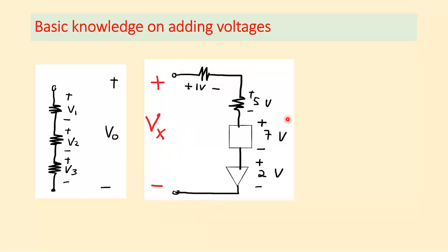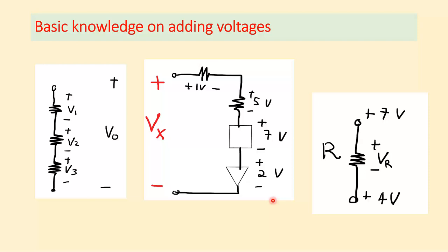There is also an important distinction between voltage at a point and voltage across a device. The voltage at a node is always measured with respect to ground. So if one node is at 7 volts and another is at 4 volts, the voltage across the resistor between them, VR, is 7 minus 4 equals 3 volts — not 7 or 4 volts.